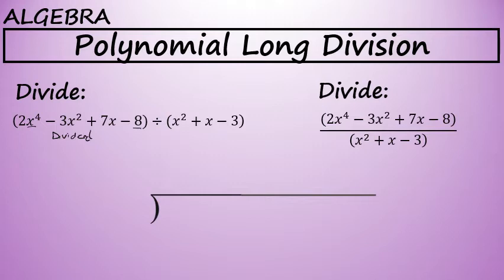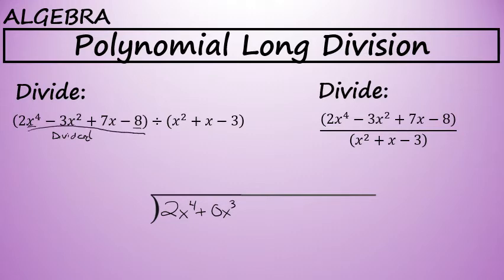Writing this dividend in decreasing degree under the division sign begins with 2X to the 4th, because X to the 4th is the highest power. From X to the 4th, the next term has to be X to the 3rd. But in this problem, it goes X to the 4th and then X to the 2nd — there's no X to the 3rd term. When performing a polynomial long division, there has to be included every term from the highest degree down to the constant. Since the X to the 3rd term is missing, you have to write 0X to the 3rd yourself.